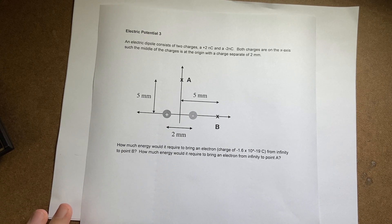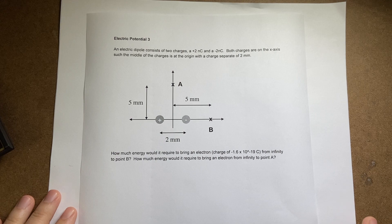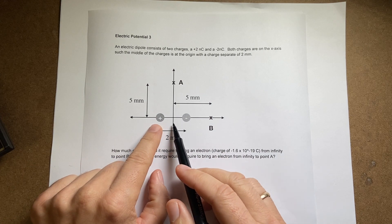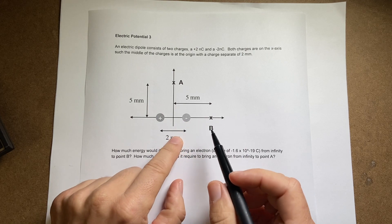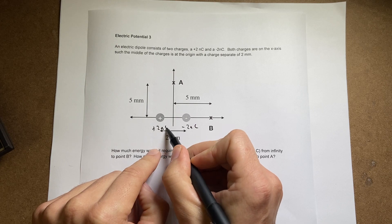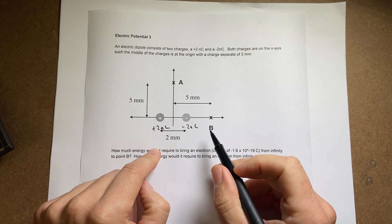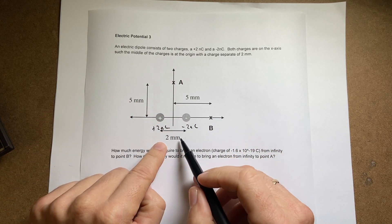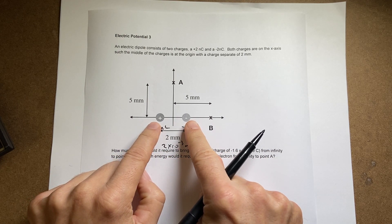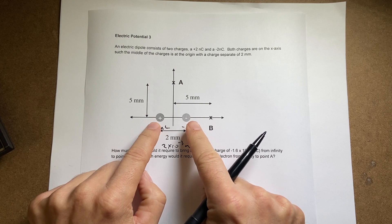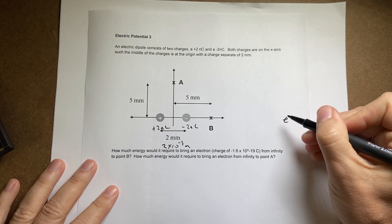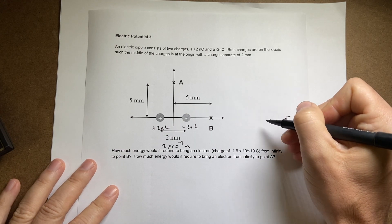Here is another practice problem for electric potential. In this case I have a dipole consisting of two charges — minus two and plus two nano coulombs — that are two millimeters apart, so two times ten to the negative third meters. I want to determine the energy it would require to bring an electron all the way in from infinity to point V.